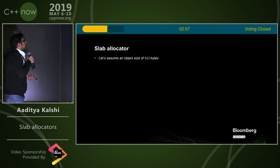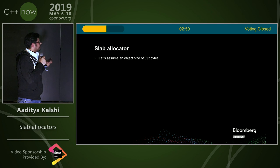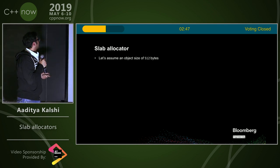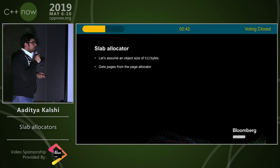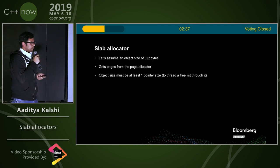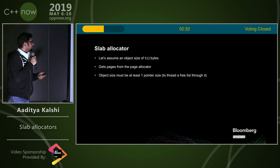Let's assume we have an object size of 512 bytes. This is fairly large, but I'm using it because it's easier to explain on slides. Typically you shouldn't use that large a size with slabs. The idea is we're going to get pages from the page allocator, and whatever object size we pick — here it's 512 bytes — it must be at least one pointer size, because we're going to thread a free list through the free objects.